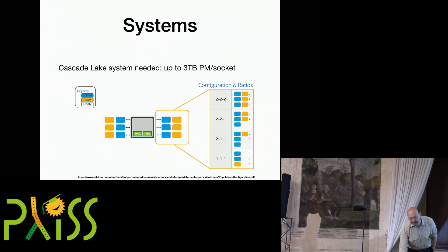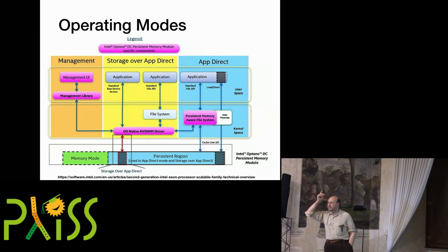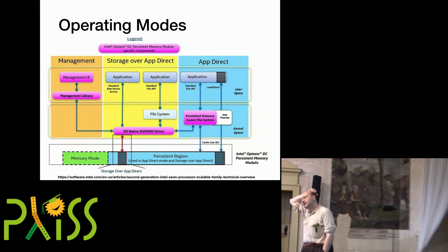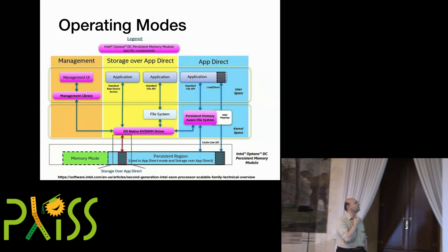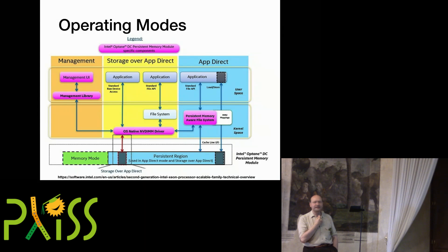You can have up to six persistent memory modules for each Cascade Lake socket, accompanied by some number of DRAMs. Notice that you have to have DRAM — you cannot have just persistent memory. This works out as three terabytes per socket of persistent memory. The biggest Cascade Lake system currently releasing is eight sockets, so that's 24 terabytes of persistent memory. The operating modes are: one is called memory mode, where it uses the associated DRAM on the same memory controller as a front-side cache for persistent memory.